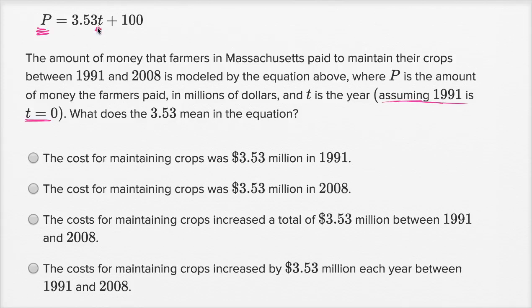So let's look at this. In 1991, when t is equal to zero, this whole term is going to be equal to zero, and the farmers are going to pay 100 million dollars in 1991 to maintain their crops. These are all the farmers in Massachusetts.